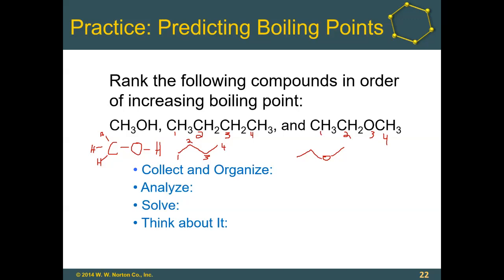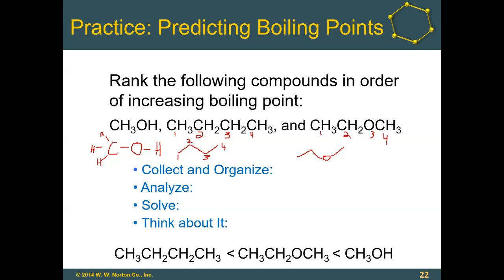Even though butane is a little bit bigger than methanol, the dispersion forces are still weak enough that it would have the weakest intermolecular forces. The last molecule, ethyl methyl ether — CH3CH2OCH3 — has an oxygen, which is electronegative, so there would be a dipole. But that oxygen is not attached to any hydrogens, so while it could accept hydrogen bonding from another molecule, on its own associating with a like molecule it cannot form hydrogen bonds. So even though it has a dipole, it goes in the middle, and methanol has the strongest intermolecular forces.